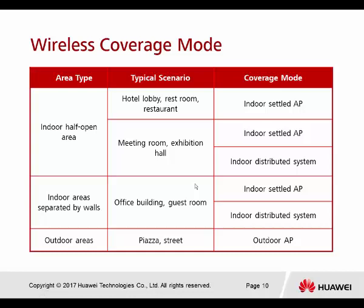For coverage mode: indoor half-open area is used for scenarios like hotel lobby, restroom, or restaurant — we can use the indoor sector AP. For meeting rooms and exhibition halls, we can choose indoor sector AP or distributed systems. For indoor areas separated by walls, such as office buildings or guest rooms, we can choose either indoor sector AP or indoor distributed systems. For outdoor areas, we only select the outdoor AP.